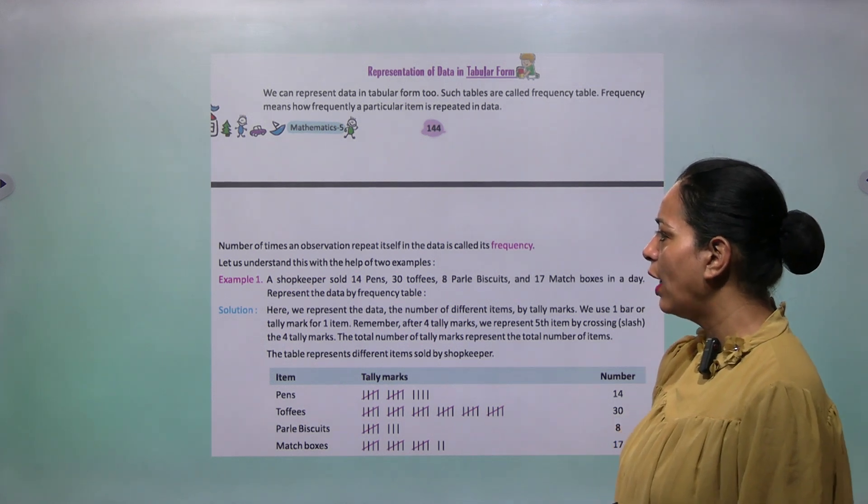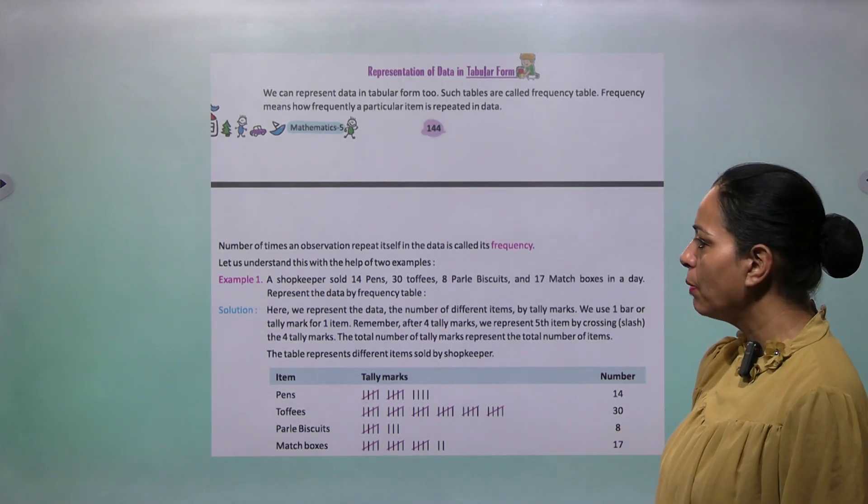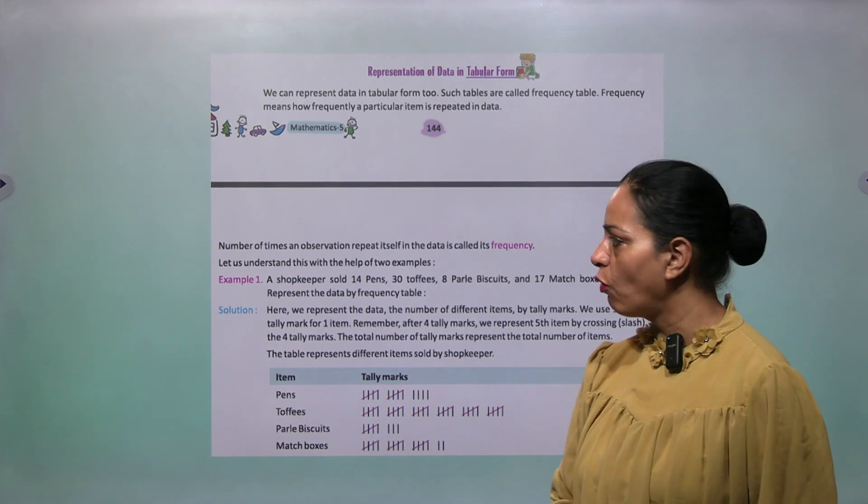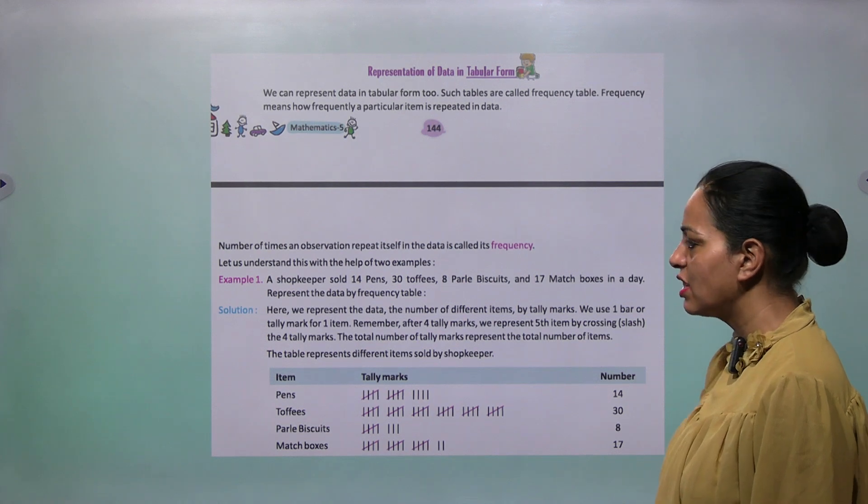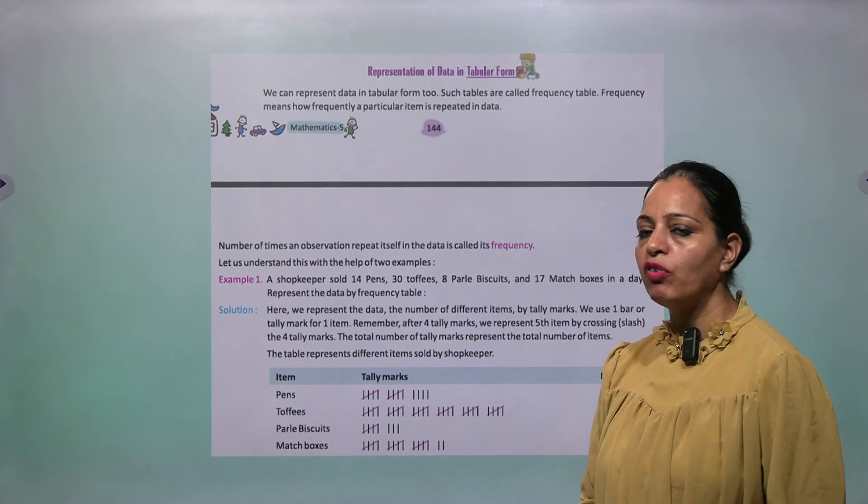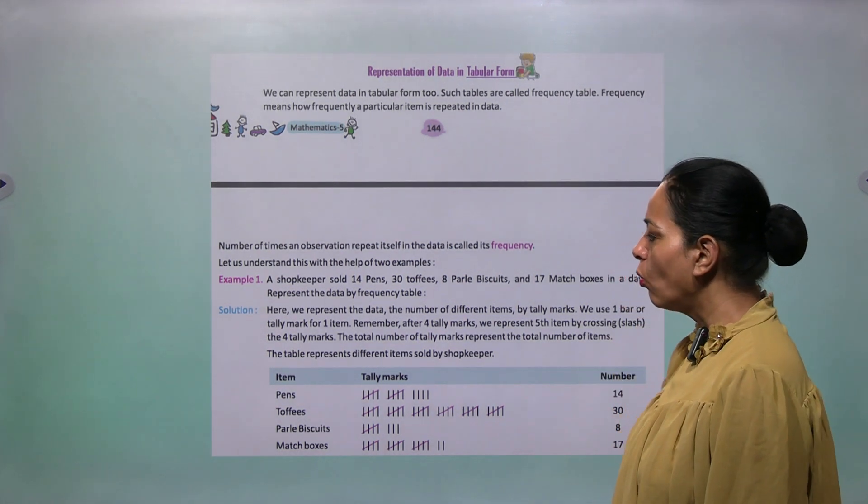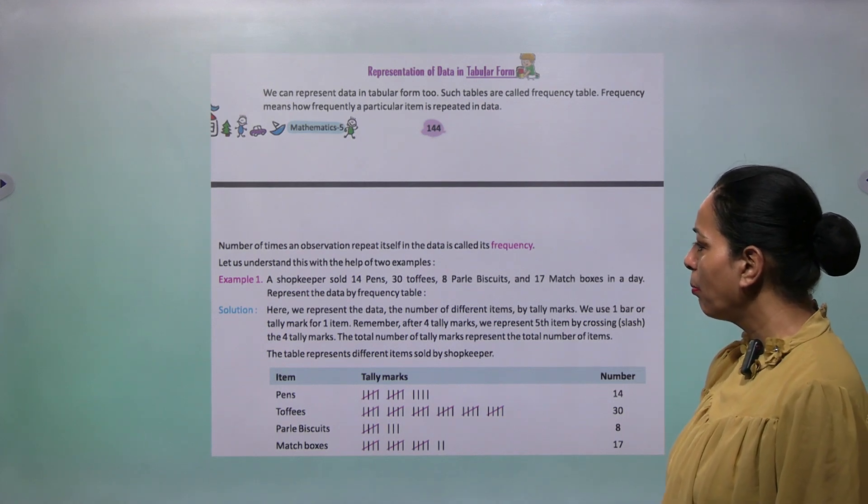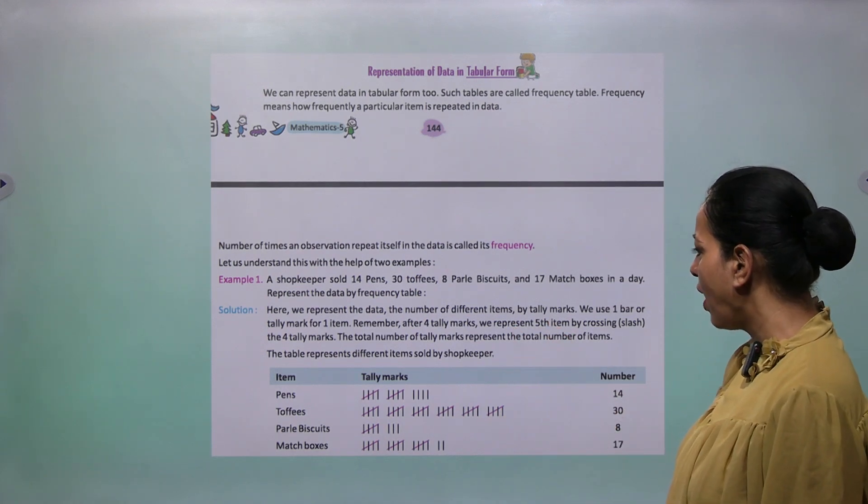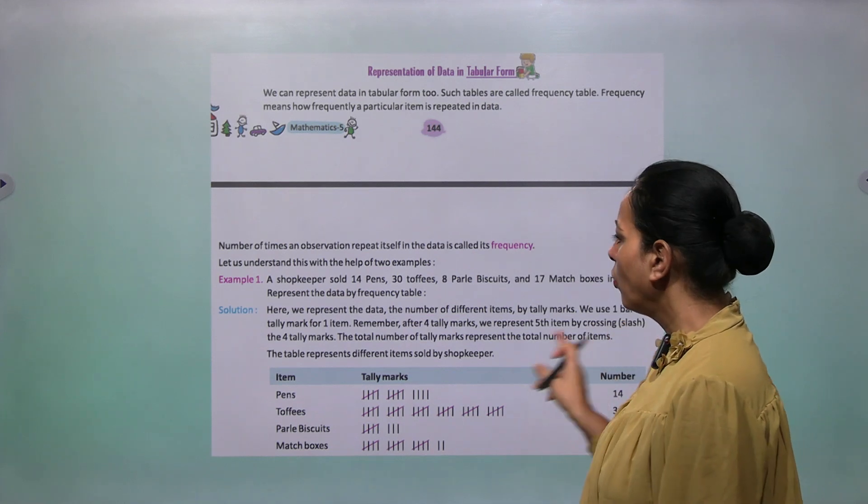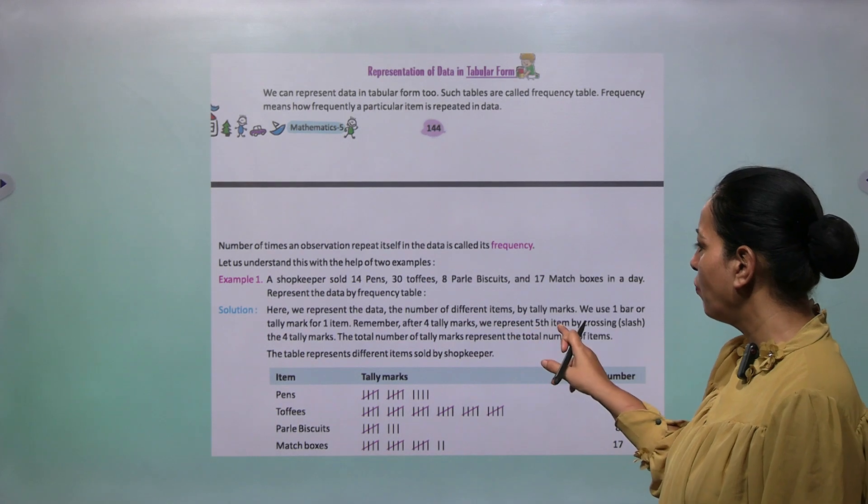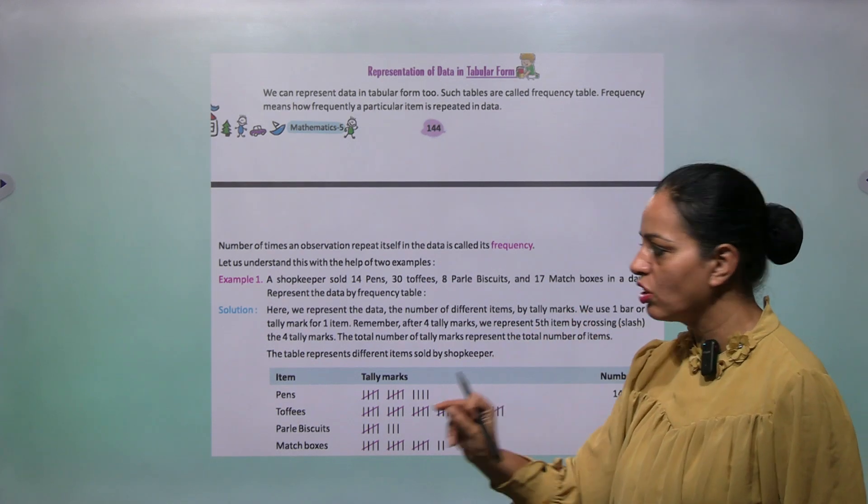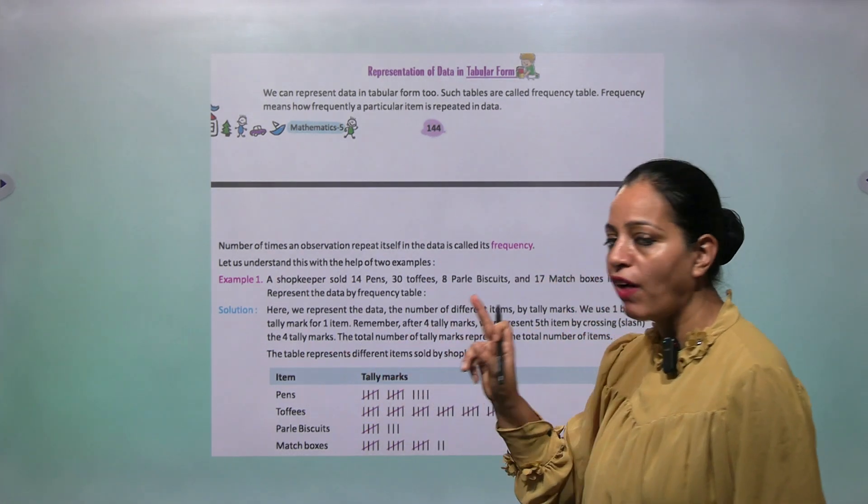Let us understand this with the help of two examples. Example 1: The shopkeeper sold 14 pens, 30 toffees, 8 Parle biscuits, and 17 match boxes in a day. Represent the data by frequency table. Here we represent the data, the number of different items by tally marks. We use one bar or tally mark for one item. Remember, after four tally marks we represent the number of different items by crossing slash the four tally marks. If you have to write five, you will write four lines and one slash. This becomes five.